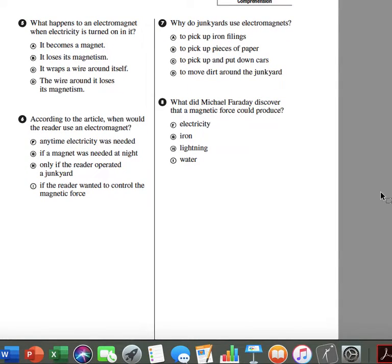Number 5. What happens to an electromagnet when electricity is turned on in it? A. It becomes a magnet. B. It loses its magnetism. C. It wraps a wire around itself. D. The wire around it loses its magnetism.